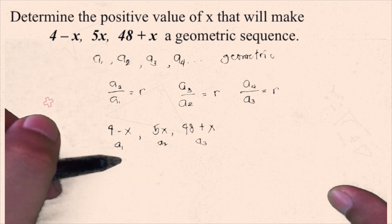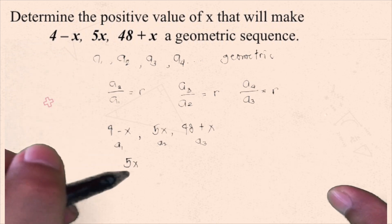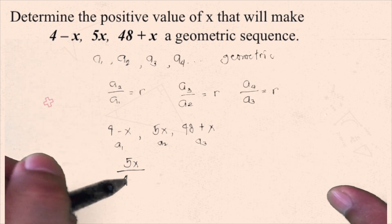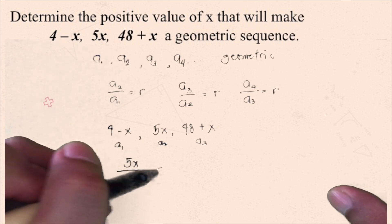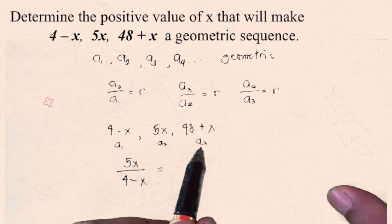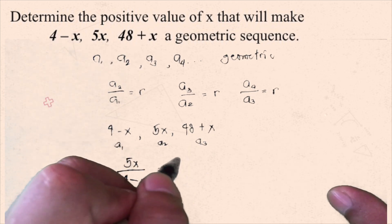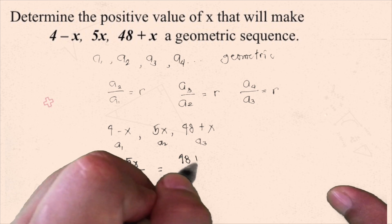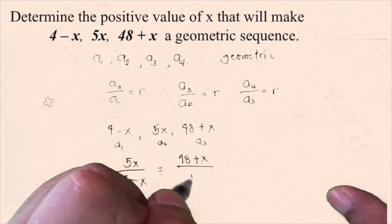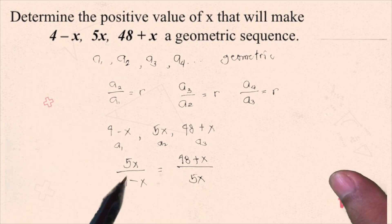So, this will be 5x divided by 4 minus x is just equal to a sub 3 divided by a sub 2.